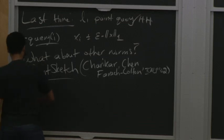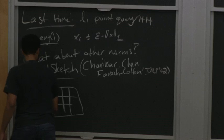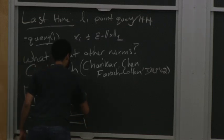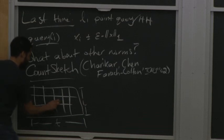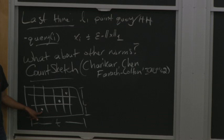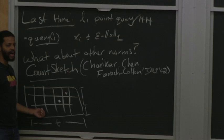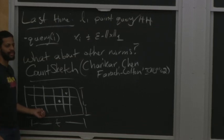It's the same idea as last time. You have this grid with t counters per row and L rows. You have a hash function which can be pairwise independent, and you hash each element to one place in every row and add it there. But if you want L2 error, you add xi times sigma_j(i), a random sign.